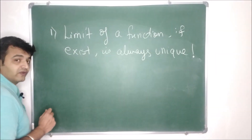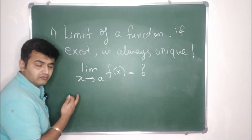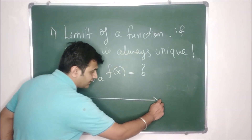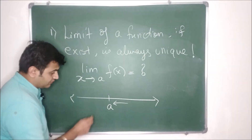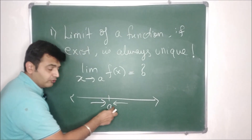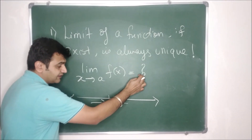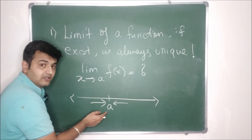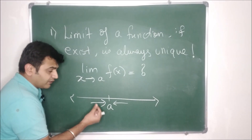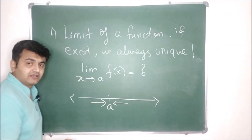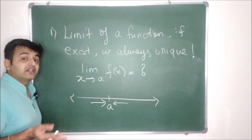Before going to the higher variable case, let's recall what happens in the one-variable case. If you want to find the limit of a function as x approaches a, you approach a from the left-hand side and from the right-hand side. If the left-hand limit equals the right-hand limit, the limit exists and equals that common value. So in one-dimensional space you have only two paths — left and right. If they are equal, limit exists; if not, limit does not exist.